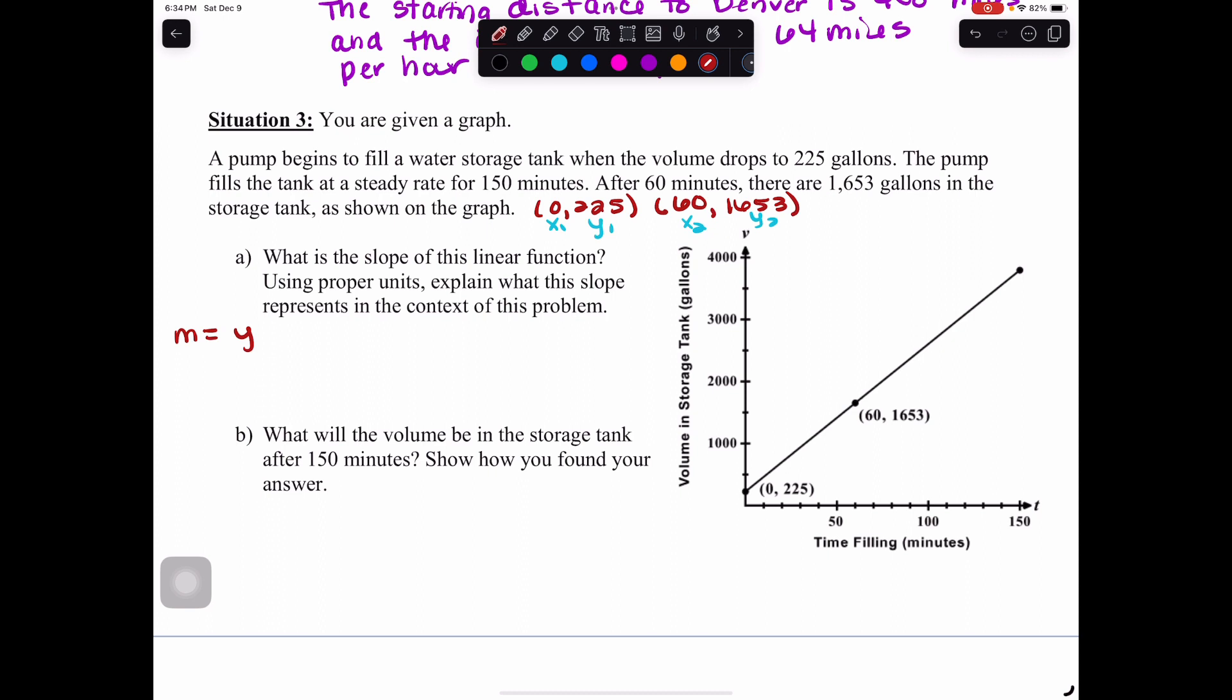Those two coordinates are going to give us our x1, y1, x2, and y2. Where it says what is the slope, we can now calculate our slope using the formula. m equals y2 minus y1 over x2 minus x1. We'll do our outline so we don't mess up any of our numbers. y2 is the 1,653 number, y1 is 225, x2 is 60, and x1 is 0. When we subtract, we get 1,428 over 60, which is 23.8. We would not have been able to find that by counting rise over run.